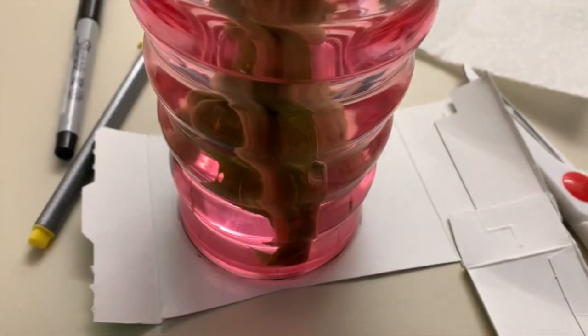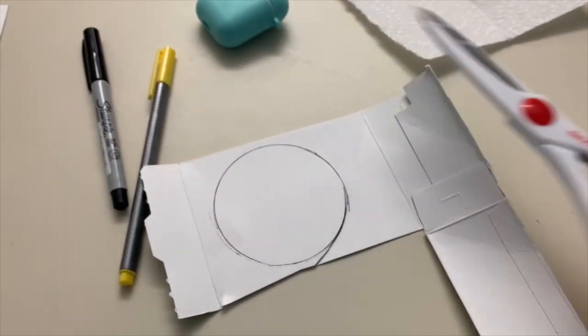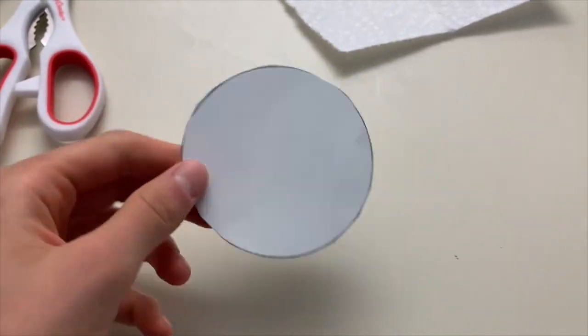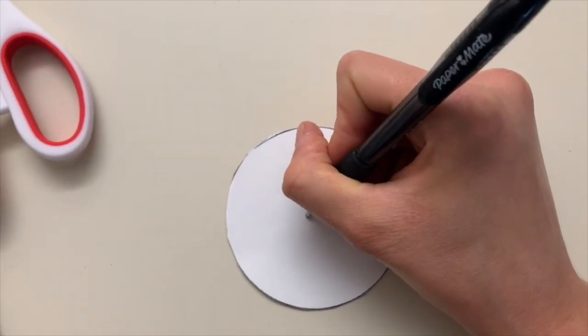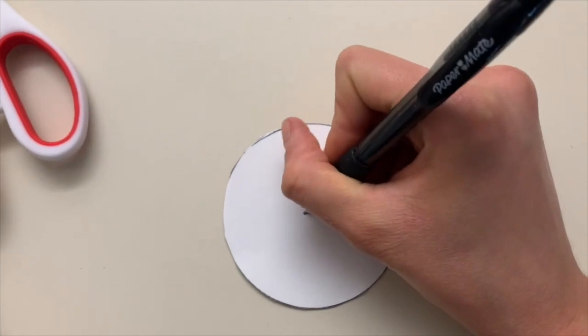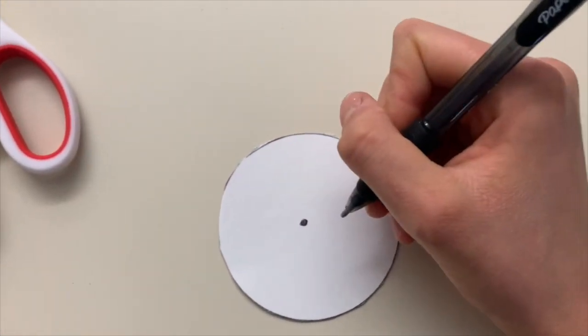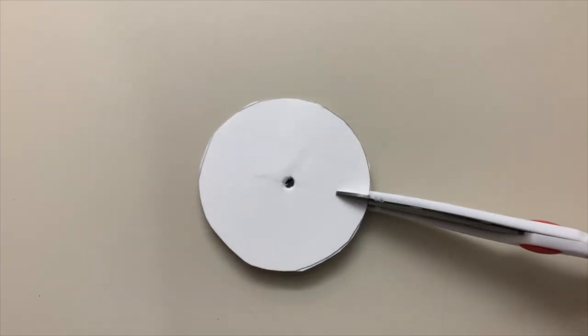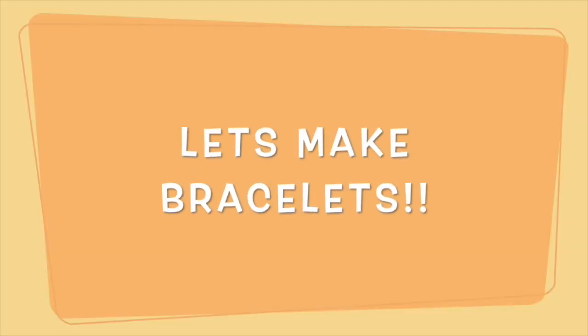First use a cup to trace a circle on an old cereal box or other stiff material. Then use your scissors to cut out that circle. Draw a dot in the middle of the circle and then poke a hole using your pen. Once you poke your hole you'll use scissors to cut eight slits in the circle. Keep in mind you can skip these steps if you have a craft kit. Let's move to the fun part now.